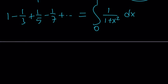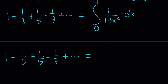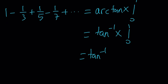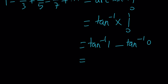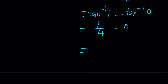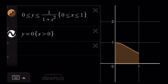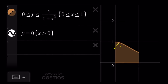That integral should be familiar — it's the arctangent, or tan inverse. The integral of 1/(1+x²) is arctan(x) from 0 to 1. Plugging in: arctan(1) minus arctan(0). The tangent of which angle is 1? The smallest positive angle is π/4. And arctan(0) is 0. So this beautiful, awesome, gigantic alternating sum converges to π/4. The graph will show you the area under the curve 1/(1+x²) from 0 to 1, which equals π/4.